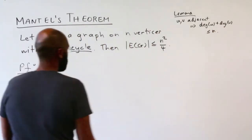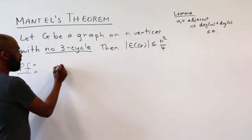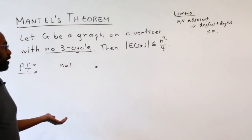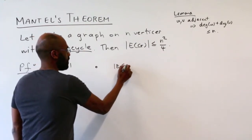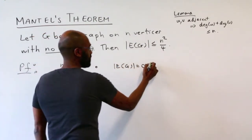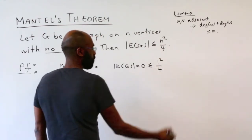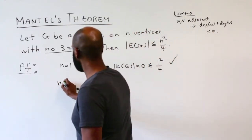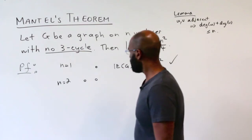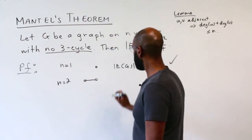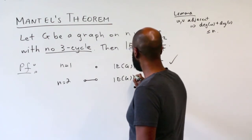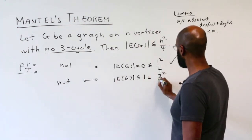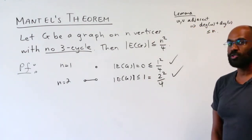Let's start with the first proof and play with a few examples. For n equals one, we have one vertex and can't have any edges at all, so the number of edges is zero, which is less than or equal to n squared over four, which equals one quarter. For n equals two, the maximum number of possible edges is one, so the number of edges is less than or equal to one, which equals two squared over four. So we're happy in both the n equals one and n equals two cases.